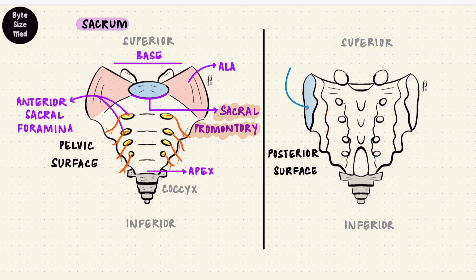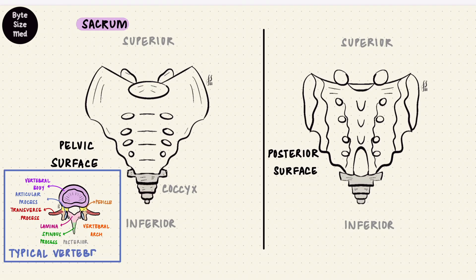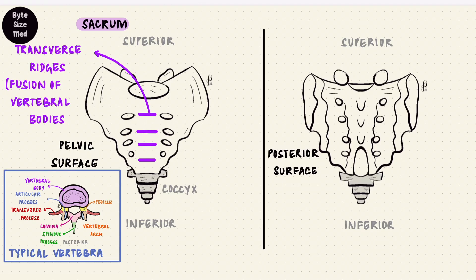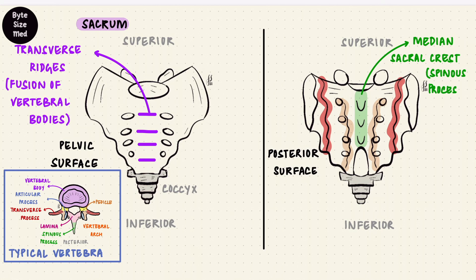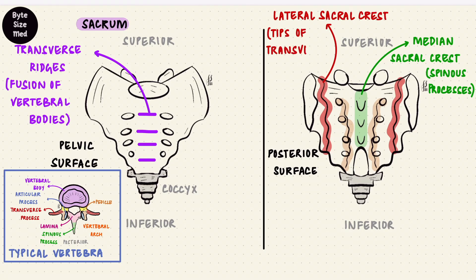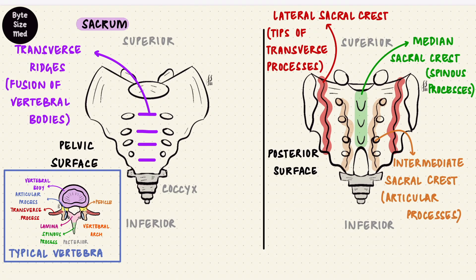Let's bring back a typical vertebra to see which parts fuse to create what. The pelvic surface has transverse lines — that's where the vertebrae have fused. The posterior surface would have residual structures from the vertebral arch and its processes, forming five longitudinal ridges called sacral crests. In the center is the median sacral crest, where the spinous processes have fused. There are lateral sacral crests — the outermost — where the tips of the transverse processes have fused. And in between are the intermediate sacral crests, which are fused articular processes: median, lateral, and intermediate sacral crests.